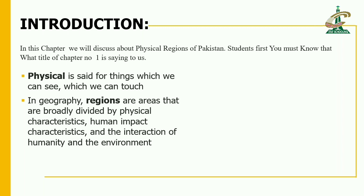Students, first you must know what the title of Chapter Number 1 is telling us. Let's discuss it. You see the word 'physical' — physical refers to things which we can see and which we can touch. In geography, regions are areas that are broadly divided by physical characteristics, human impact characteristics, and the interaction of humanity and the environment.